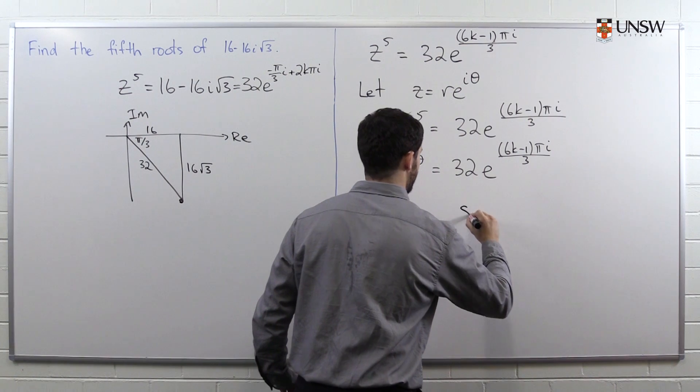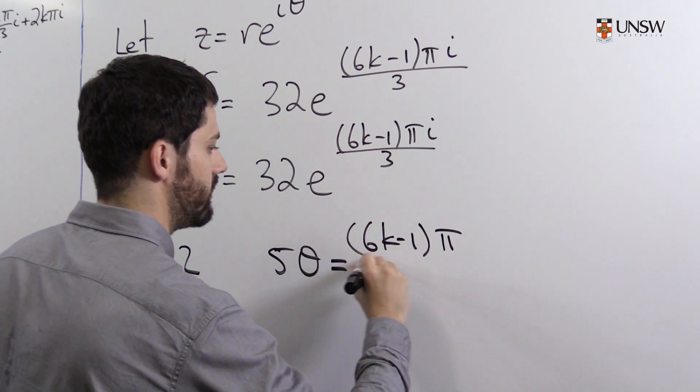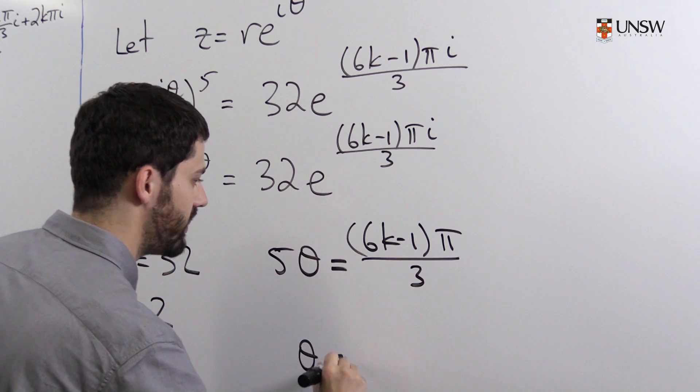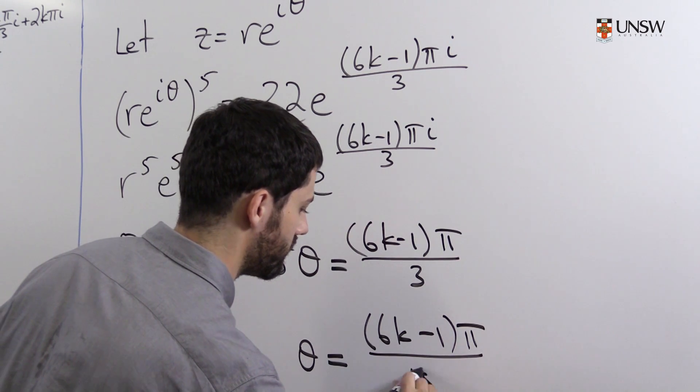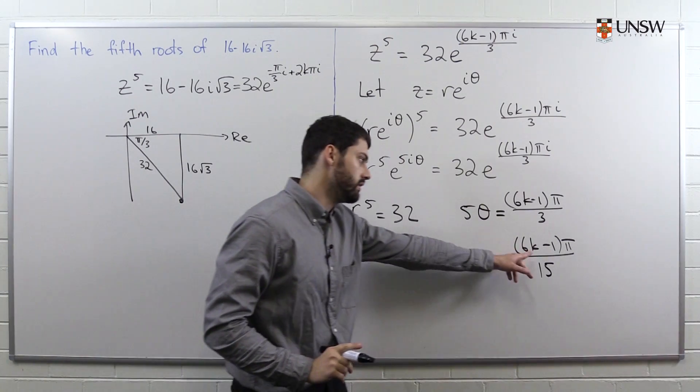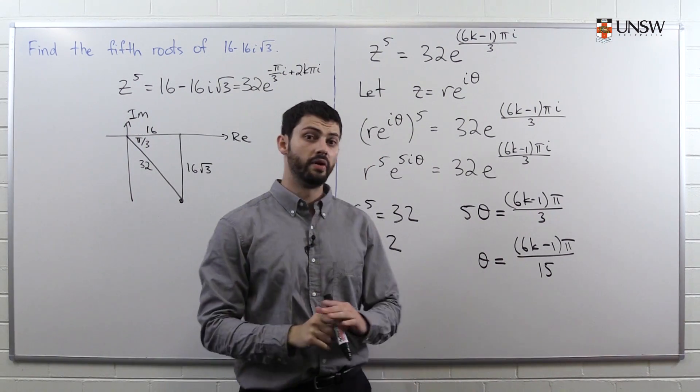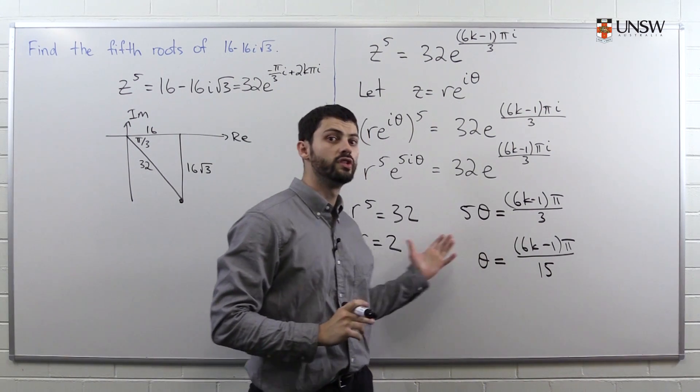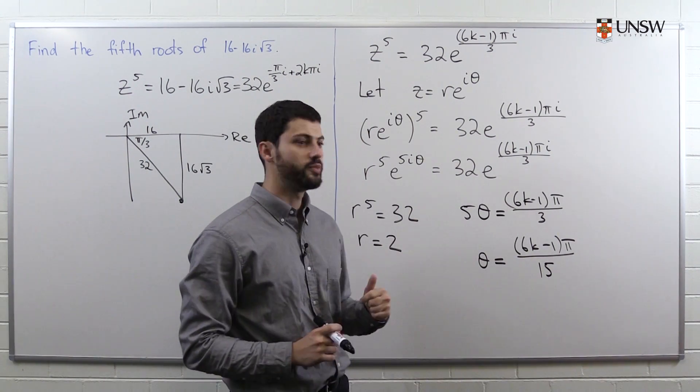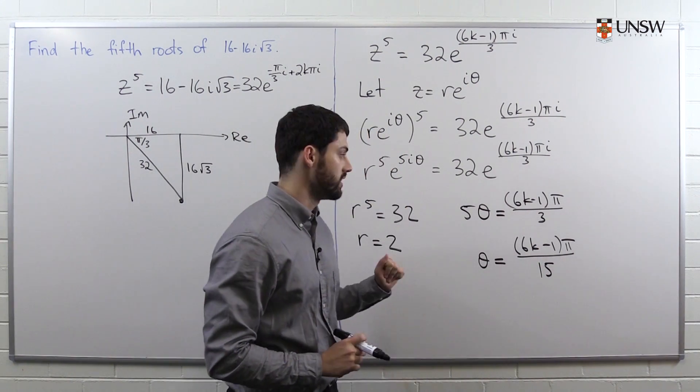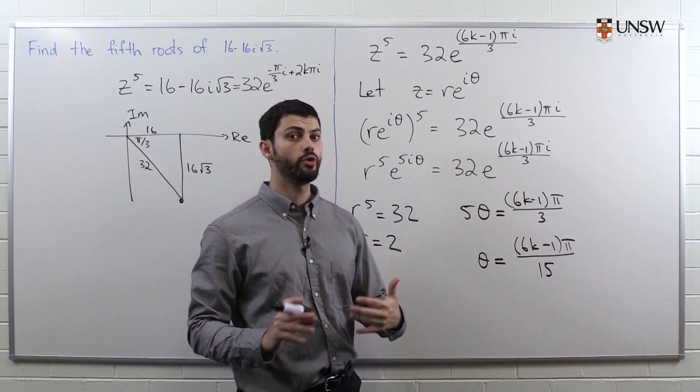Here, we also have 5θ = (6k-1)π/3. And if we divide by 5, we get θ = (6k-1)π/15. And any value of k that you substitute in will give you a solution to this equation. But there's only 5 unique values of k which will give you different solutions. All the other values of k will get you a solution that's equal to one of the other ones.